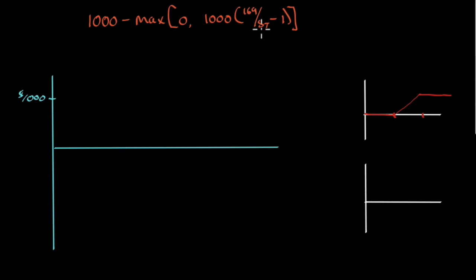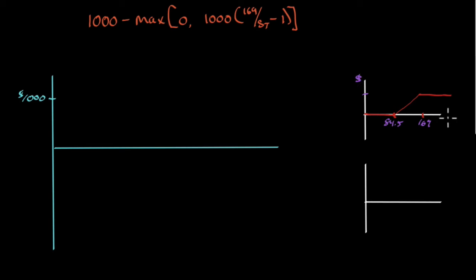When we drew the payoff chart we had 84.5 and 169 along the yen axis. But we have a problem: our payoff is in dollars while the axis is in yen. That's going to be very difficult to work with. It's better if everything is in dollars, so I want to flip the representation.